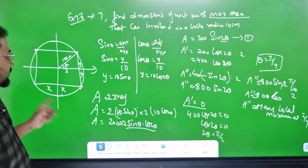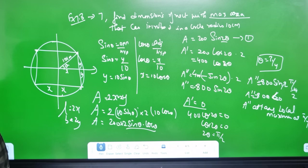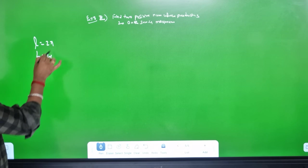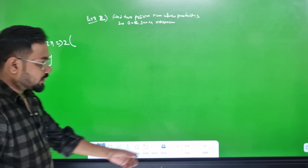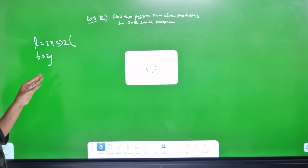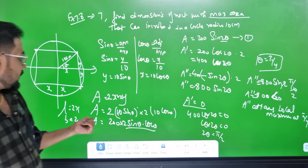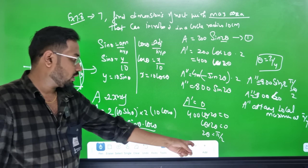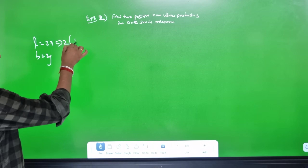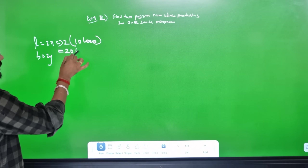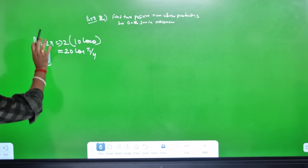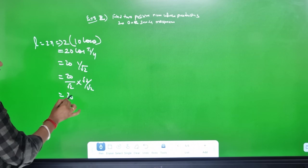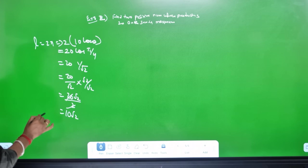The dimensions are length = 2x and breadth = 2y. Length = 2x = 2 × 10cosθ = 20cos(π/4) = 20 × (1/√2) = 20/√2 = 10√2.